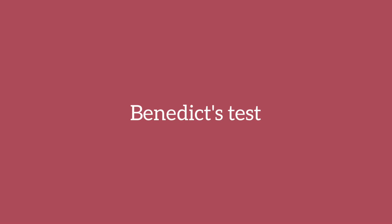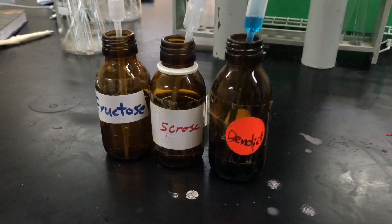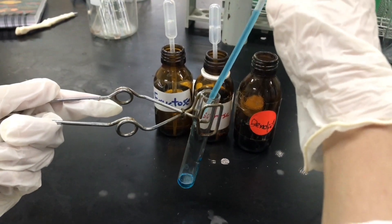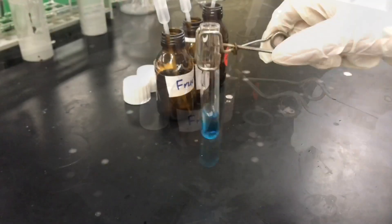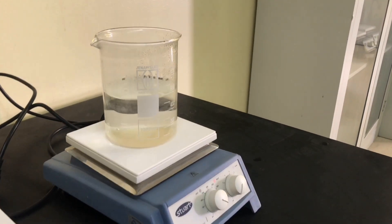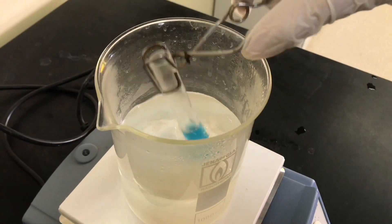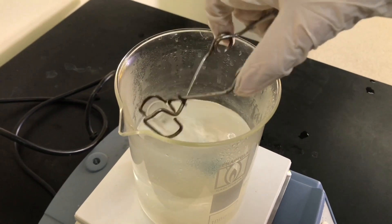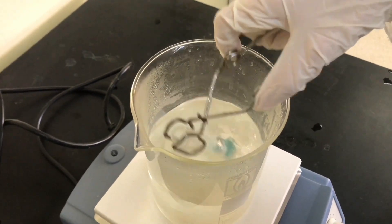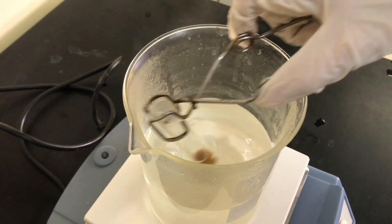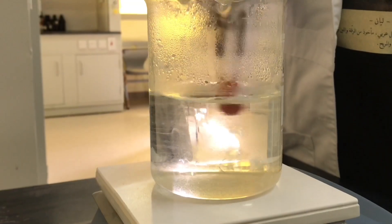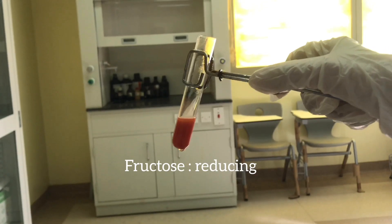Moving on to Benedict's test, which also aims to identify if the sugar is a reducing or non-reducing sugar. You're going to need Benedict's reagent, a reducing sugar like fructose, and a non-reducing sugar like sucrose. Add two mils of Benedict's reagent, then add five drops of a reducing sugar like fructose. Shake well, then carefully heat in a water bath for five minutes — be patient and shake while heating. You're going to observe a change of color into red, indicating the presence of a reducing sugar. The color might vary from bright orange to red to reddish brown depending on the reducing sugar used. As we used fructose, it turned out to be a really bright orange-reddish color. This is the result for a reducing sugar.